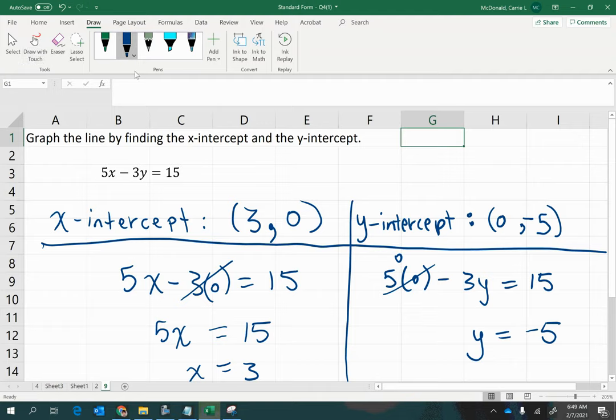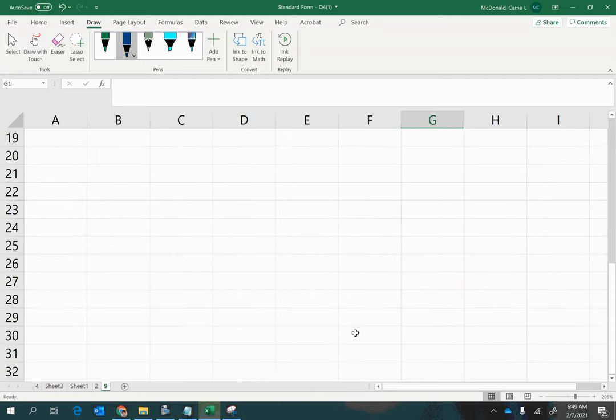So now I have the x-intercept of 3 and the y-intercept of negative 5. So to graph this, I'm going to go to 3 on the x-axis and negative 5 on the y-axis,